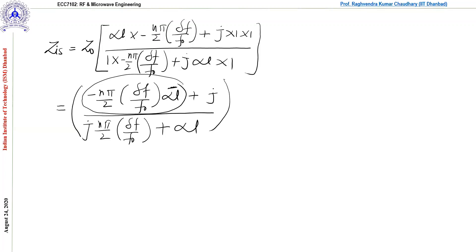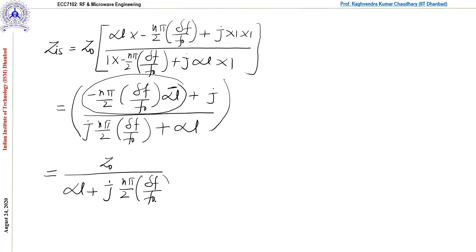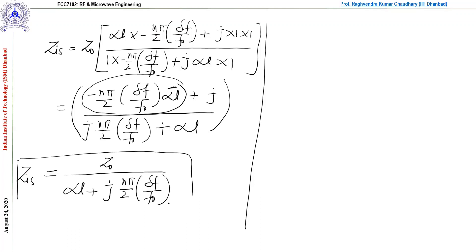We can ignore that term, and this can be written as Z_is equals Z0 over [αl + j·n·π/2 times Δf/f0]. This is Z_is. Now we need to work with this outcome. Some small mathematics we need to perform, and we can develop very important relations here. Because this is a complex quantity at higher frequency, let us convert it: |Z_is|² equals Z0² divided by [αl² + (n·π/2 times Δf/f0)²].